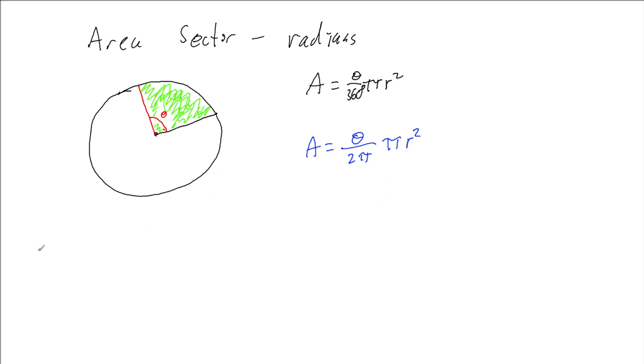Now with this we can see that the π's cancel out and I'm left with my angle over 2 times the radius squared. Another way we can write this, which is quite common, is a half of the radius squared times the angle of the sector. And that's how we calculate the area of a sector where our angles are in radians.